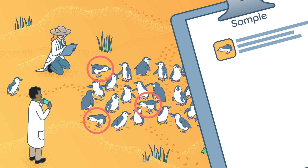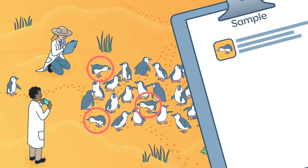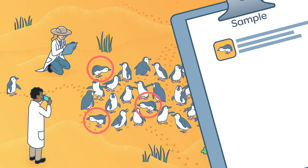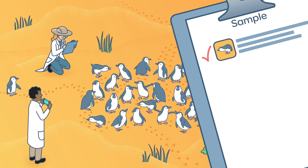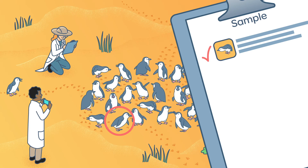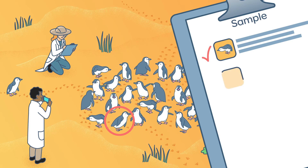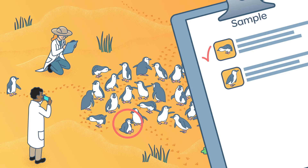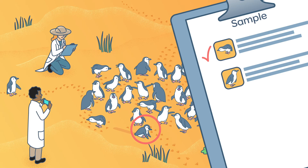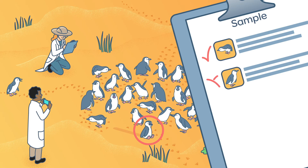If this is true, the data will be accurate. But if some of the penguins in the sample behave unusually, the data will have sampling error and may be inaccurate.